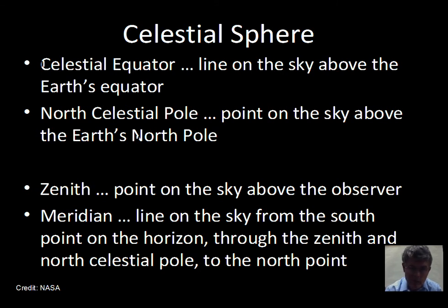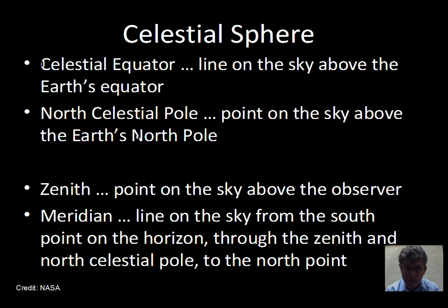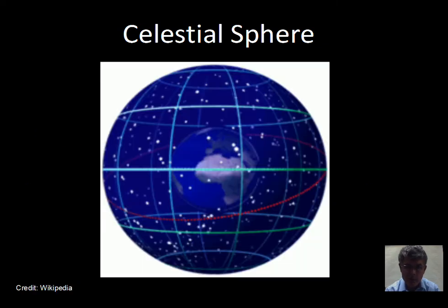So to recap: the celestial equator extends the Earth's equator out onto the sky. The north celestial pole is the point directly above the Earth's north pole. The zenith is the point at the top of my sky. The meridian is a line that goes from the south point, up to the zenith, to the north celestial pole, and down to the north point on the horizon.